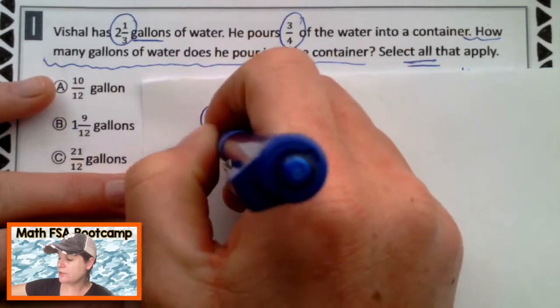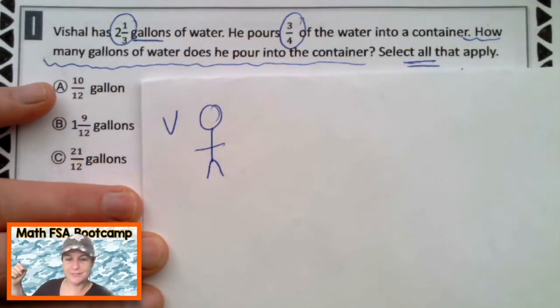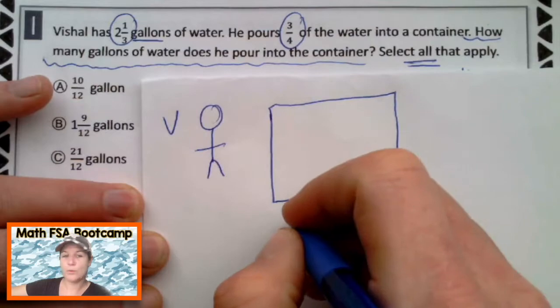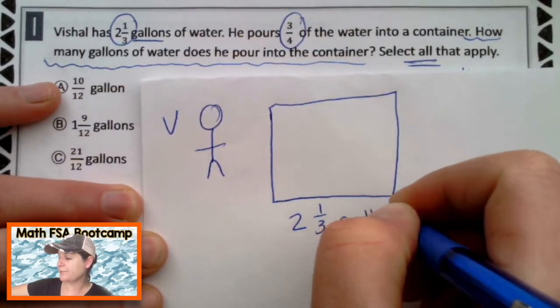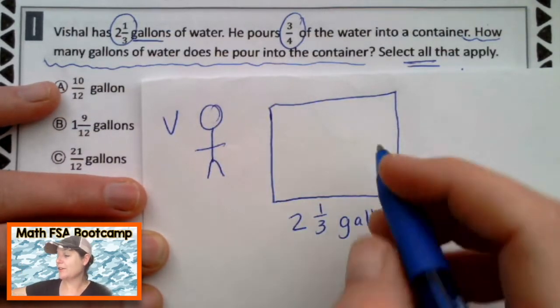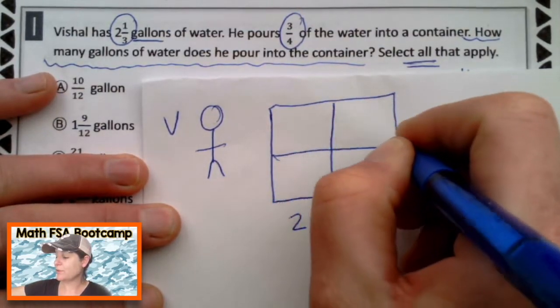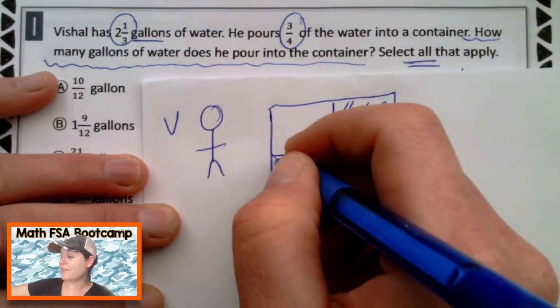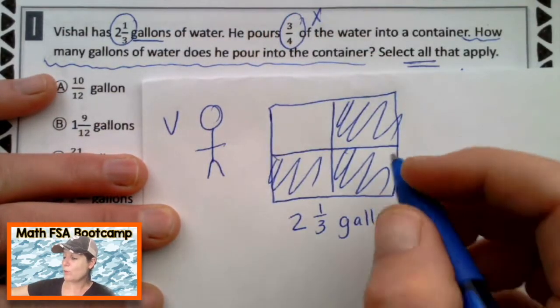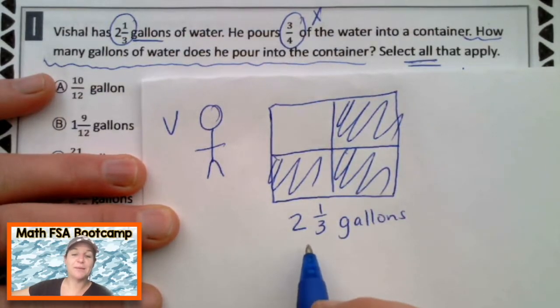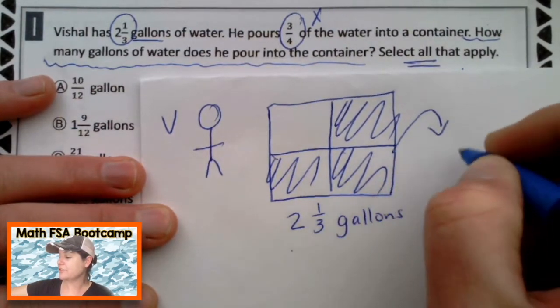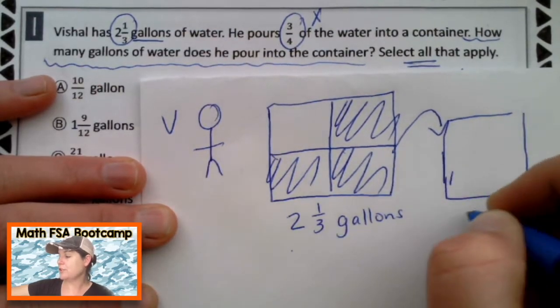So we have somebody named Vaishal. Say, hey, Vaishal. And he has some kind of container that is filled with two and one-third gallons of water. Okay? And he pours three-fourths of the water. So he's taking, if this was broken into fourths, he's taking a fraction of the water. And of right here also means that we're multiplying. So what we're going to do is multiply three-fourths times two and one-third to figure out how many gallons of water he pours into the container. So he's taking that just so we can model it and pouring it into some kind of container.